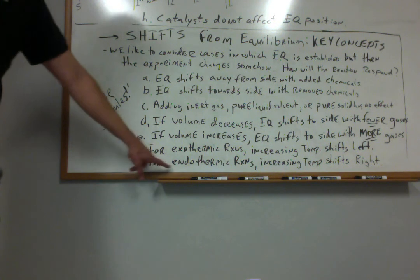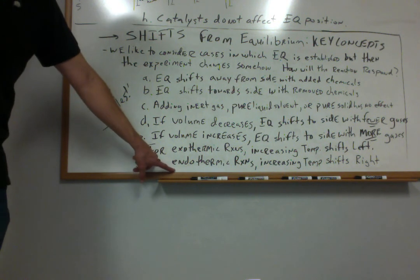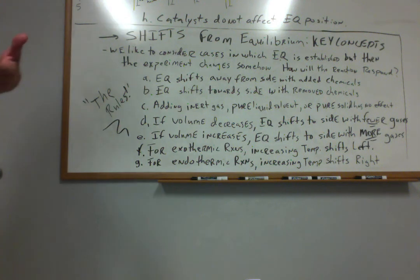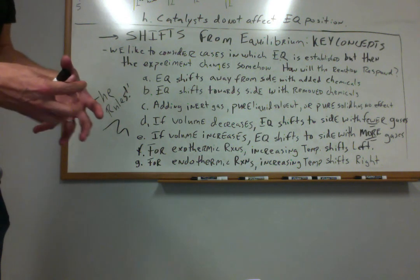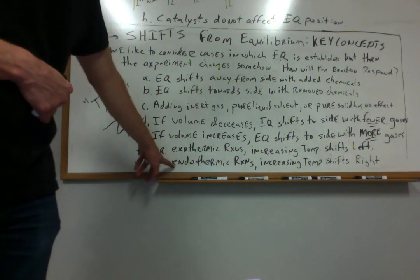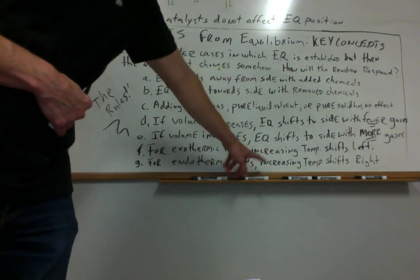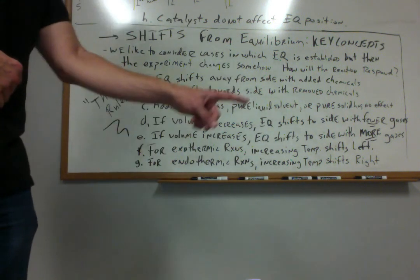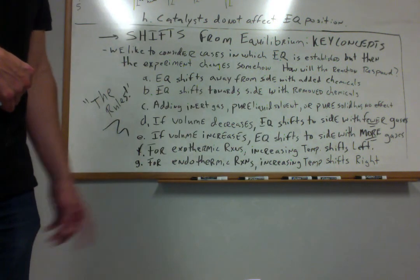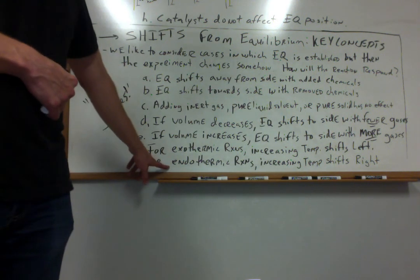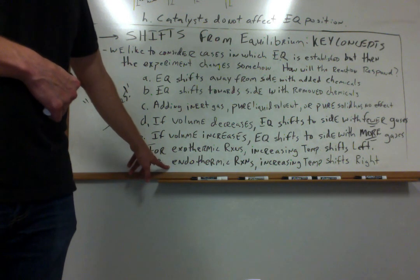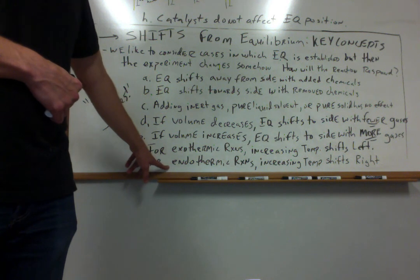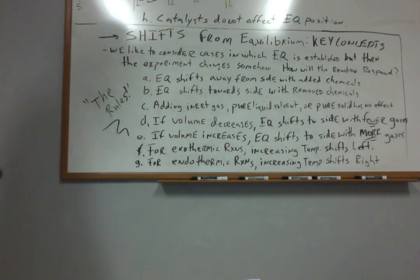Rule G tells us that if we have an endothermic reaction — where reactants absorb heat from the surroundings to make products, and the system might get cold — if you increase the temperature, that's going to shift our equilibrium towards the right, towards the products. In this case, increasing temperature for an endothermic reaction makes the K value larger, increasing the equilibrium constant.